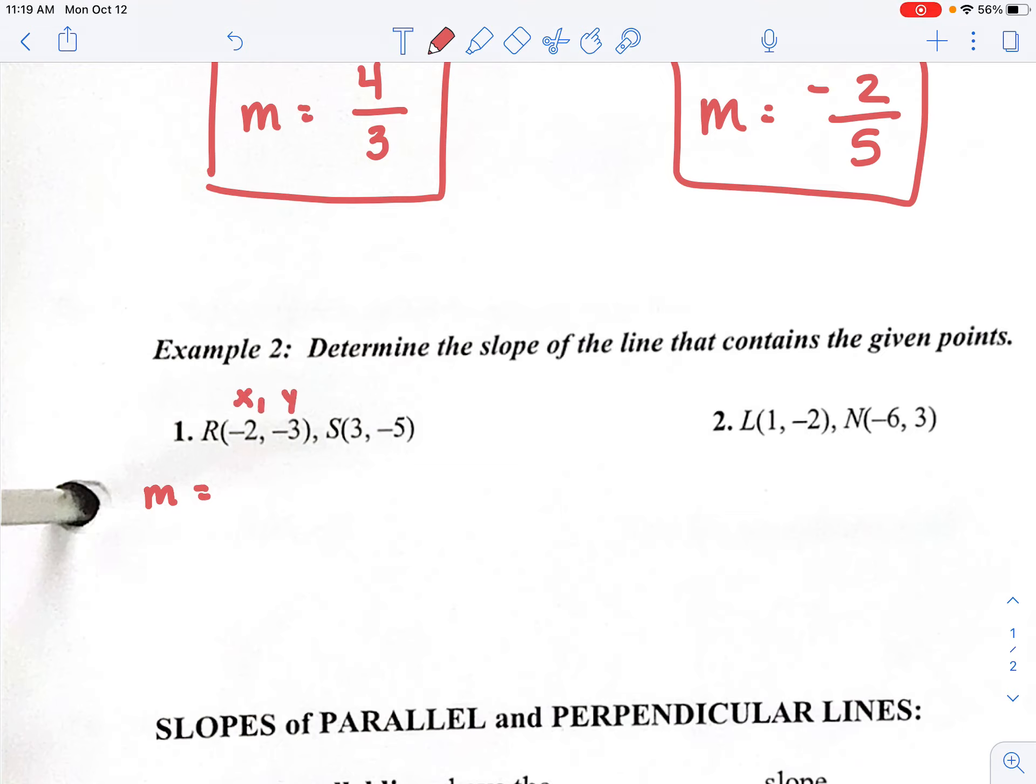So I have slope equals. If it helps, you can label your points. So it says y2, which is negative 5, minus my y1 value, which is negative 3, over x2. x2 is 3 minus my x1 value is negative 2. And from here, we're going to do some simplifying. When I have negative 5 minus a negative 3, that's actually negative 5 plus 3. Two negative signs make it positive. And 3 plus 2. So my slope here, negative 5 plus 3 is negative 2. 3 plus 2 is 5. So my slope is negative 2 over 5.